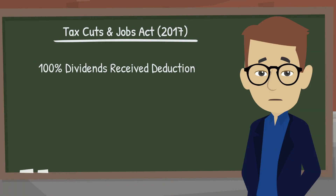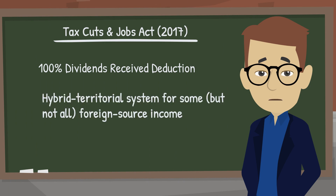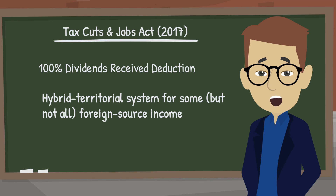Significantly, the 100% DRD places the U.S. on sort of a hybrid territorial system. The U.S. effectively uses a territorial system for qualifying foreign source dividends, but any other foreign source income — such as income earned through a foreign branch or partnership, for example — remains subject to the basic worldwide system we discussed in part one, and so continues to be taxed at the U.S. tax rate without any offset.